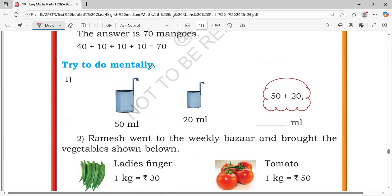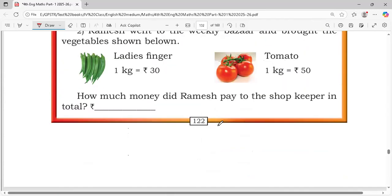Next, try to do Mental. 50 ml, 20 ml. 50 plus 10, 60. 60 plus 10, 70. This is 70 ml. Total 70 ml.